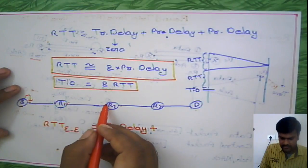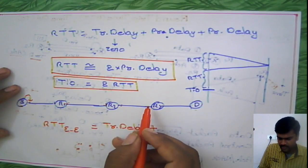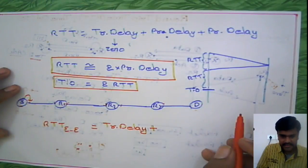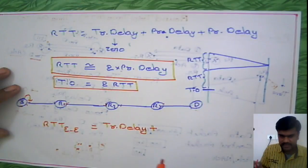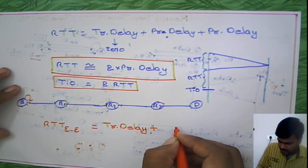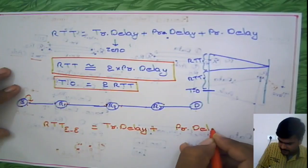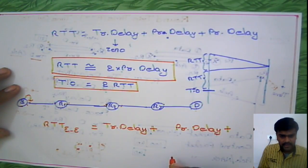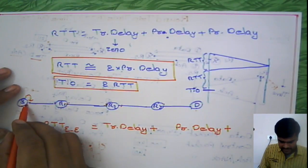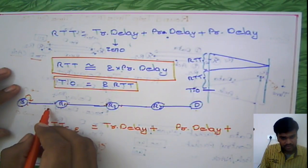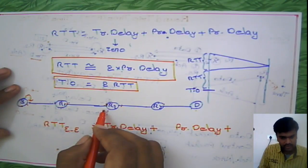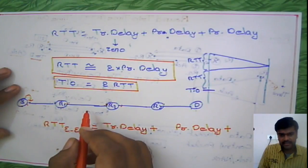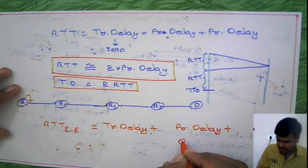From here to here, from here to here, from here to here — all together we are taking this as the propagation delay from source to destination. Then there is queuing delay: at each intermediate point some queuing delay exists, and all of those together we are taking as the total queuing delay.